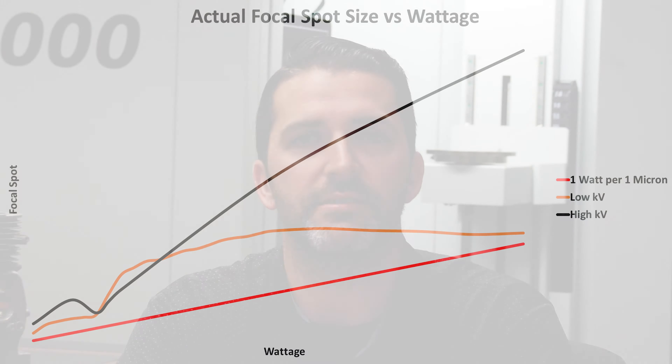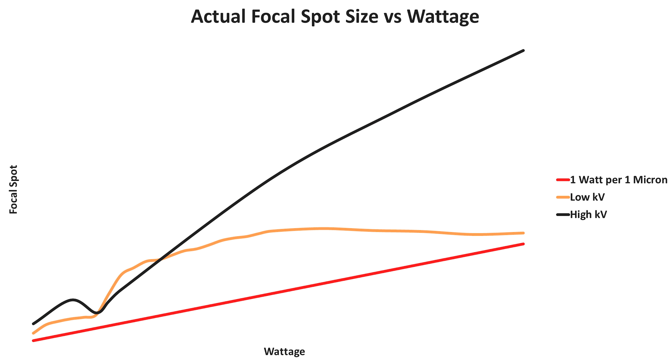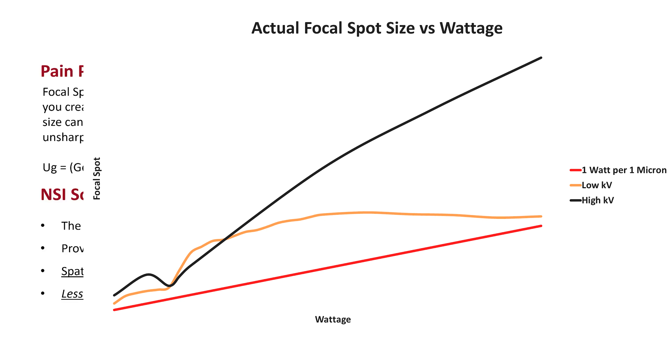In general, in industry, it's pretty widely accepted that for every watt we create with our x-ray tube, we create one micron focal spot size. But when you actually measure the focal spot, you can see that it can be dramatically different — and that's what this is for.